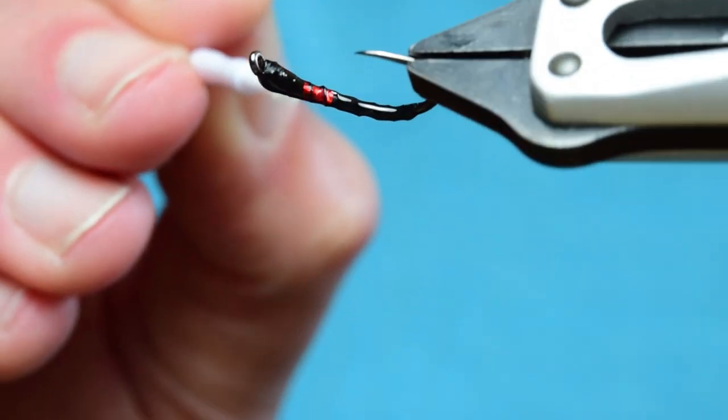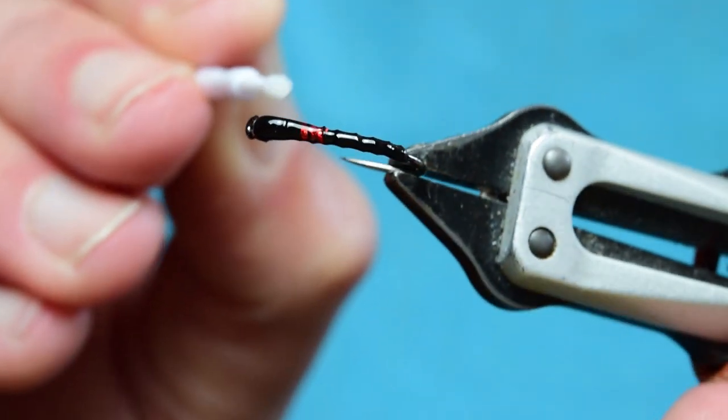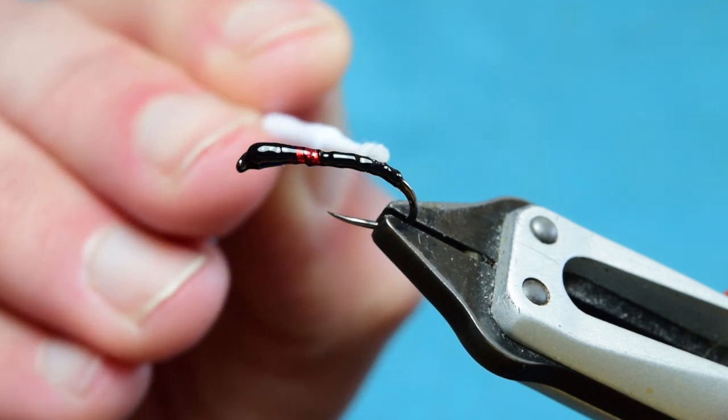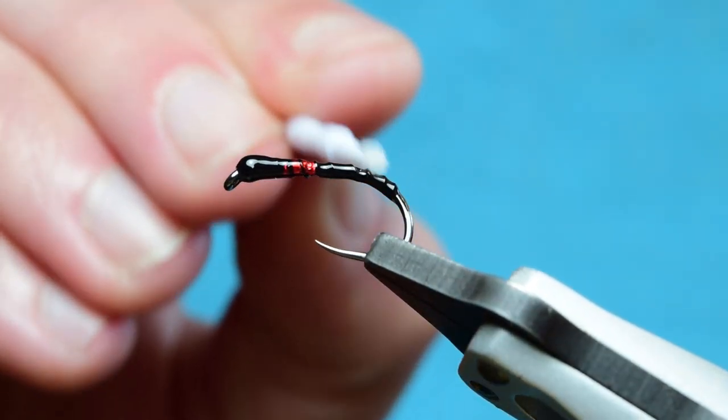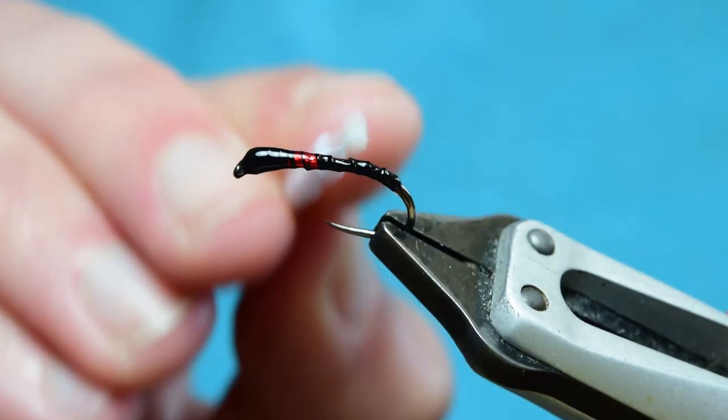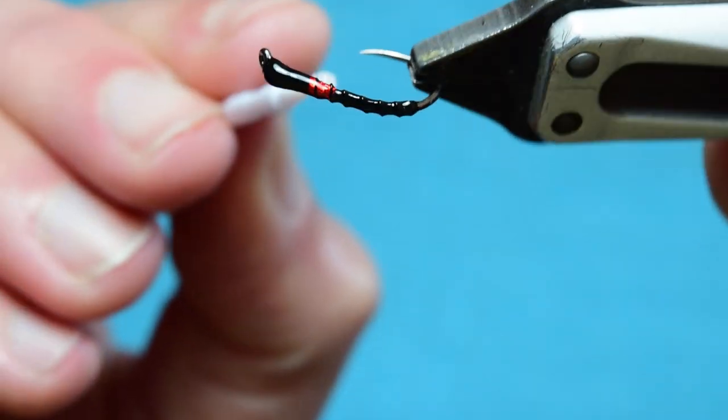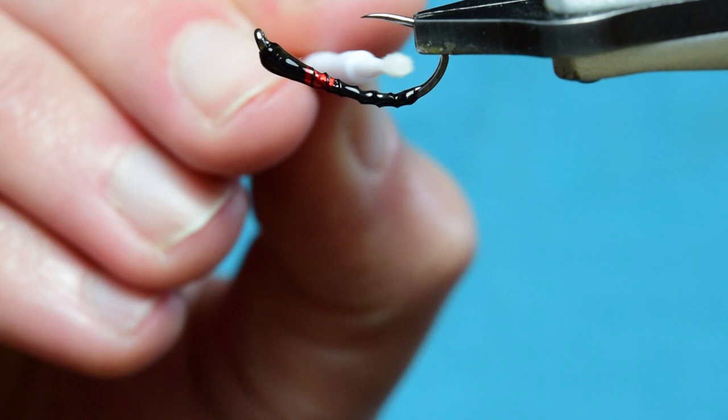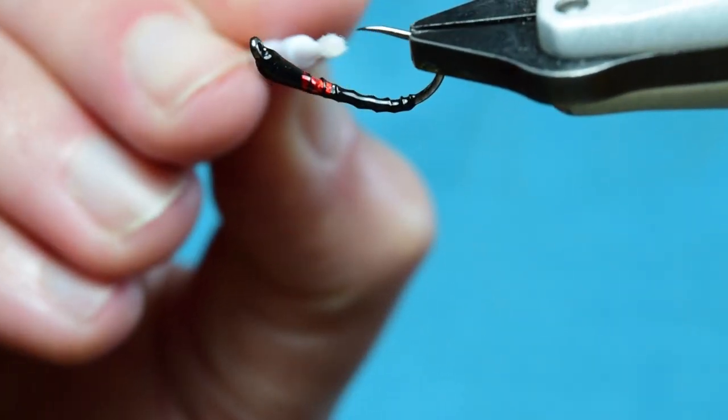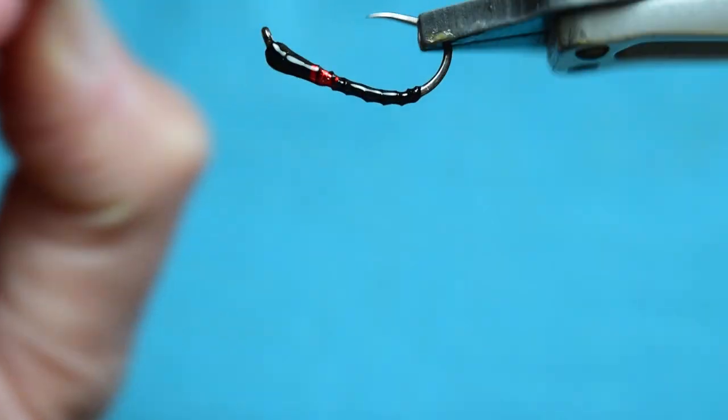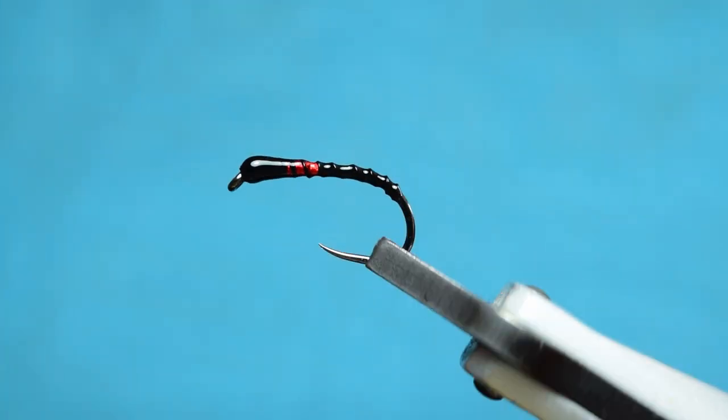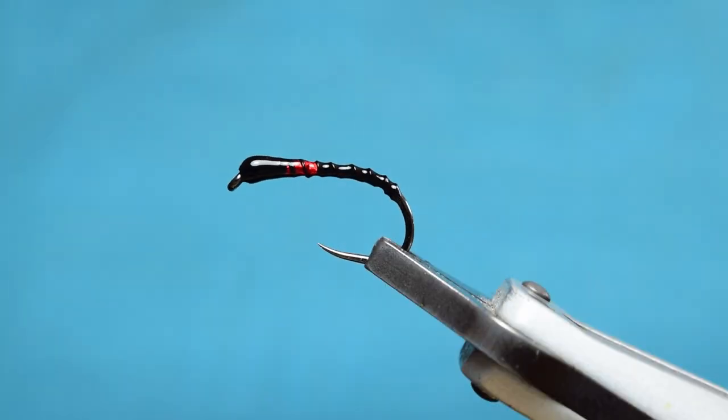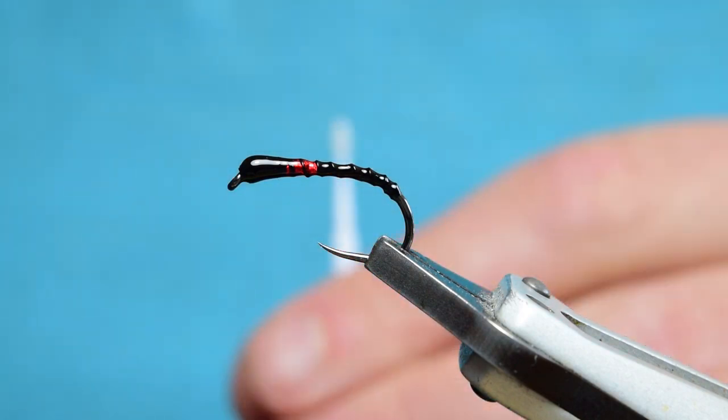I'm just basically going around the fly with the UV resin. Now I'm just going to try and get some of this resin out of my segmented sections just because I want that segmented kind of effect on the body. As you can see there, I'm getting that segment back, nice segmented section for the body.